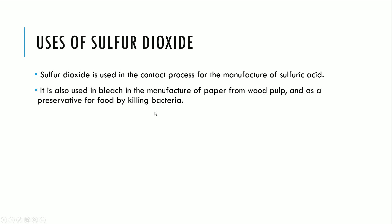Sulfur dioxide is an oxide of sulfur. It is mainly used in the contact process, which is the process that manufactures sulfuric acid — a strong acid you'll find widely in your laboratory. Sulfur dioxide is also used in bleach, in the manufacture of paper from wood pulp, and as a preservative for killing bacteria in food.